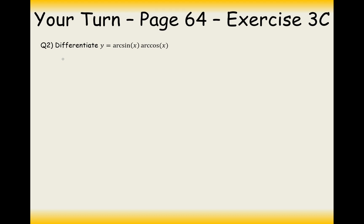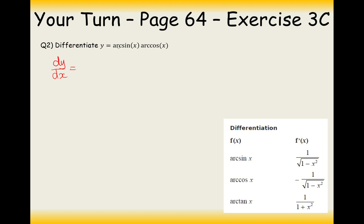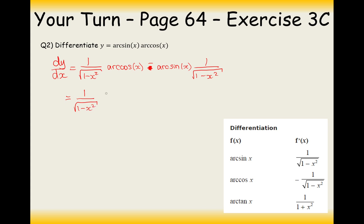This is a product rule differentiation. Using the formula booklet for the derivatives: differentiate the first function to get 1/√(1 − x²), multiply by the second (arc cos), then keep the first (arc sine) and multiply by the derivative of the second, which is −1/√(1 − x²). Factorising out 1/√(1 − x²) gives the answer: (arc cos x − arc sin x) over √(1 − x²).